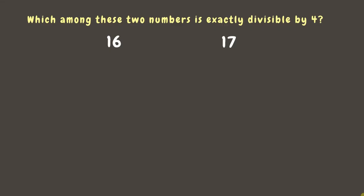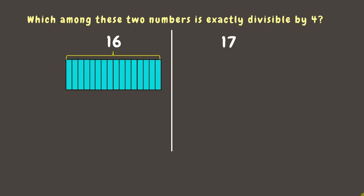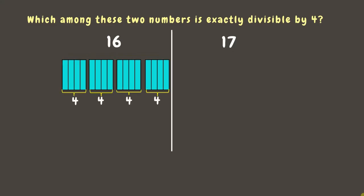Let's try to answer this question using bar models. Suppose this rectangle bar represents 16. If we divide this into four equal parts, each part will be four. This means that 16 divided by 4 is 4.